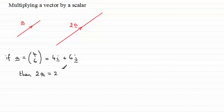So we could write that then as 2 times the column vector 4, 6, which would clearly give us the column vector 8, 12. Just doubling each of the elements in here. Or in terms of i and j, it would clearly be 8i plus 12j. So very easy idea there.